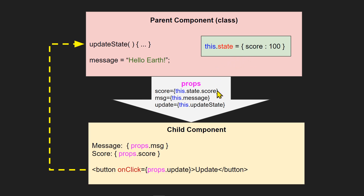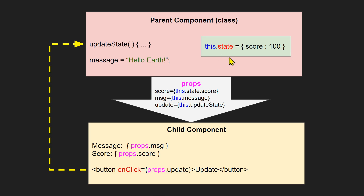I'm passing the score and using the keyword `this` because all these variables are in class scope. If it were a function, you wouldn't need `this`. I'm passing the message to a variable called `msg`, and the updateState function to a variable called `update`. Whoever created the state owns it — only that component can change it, directly or indirectly.